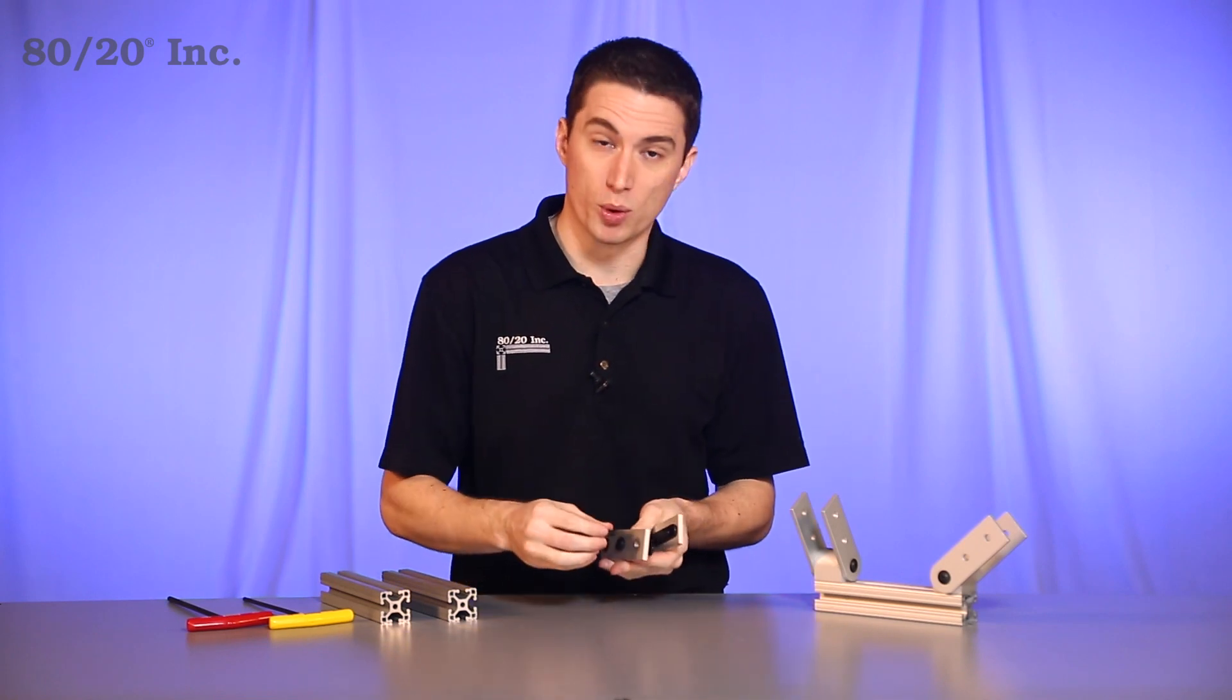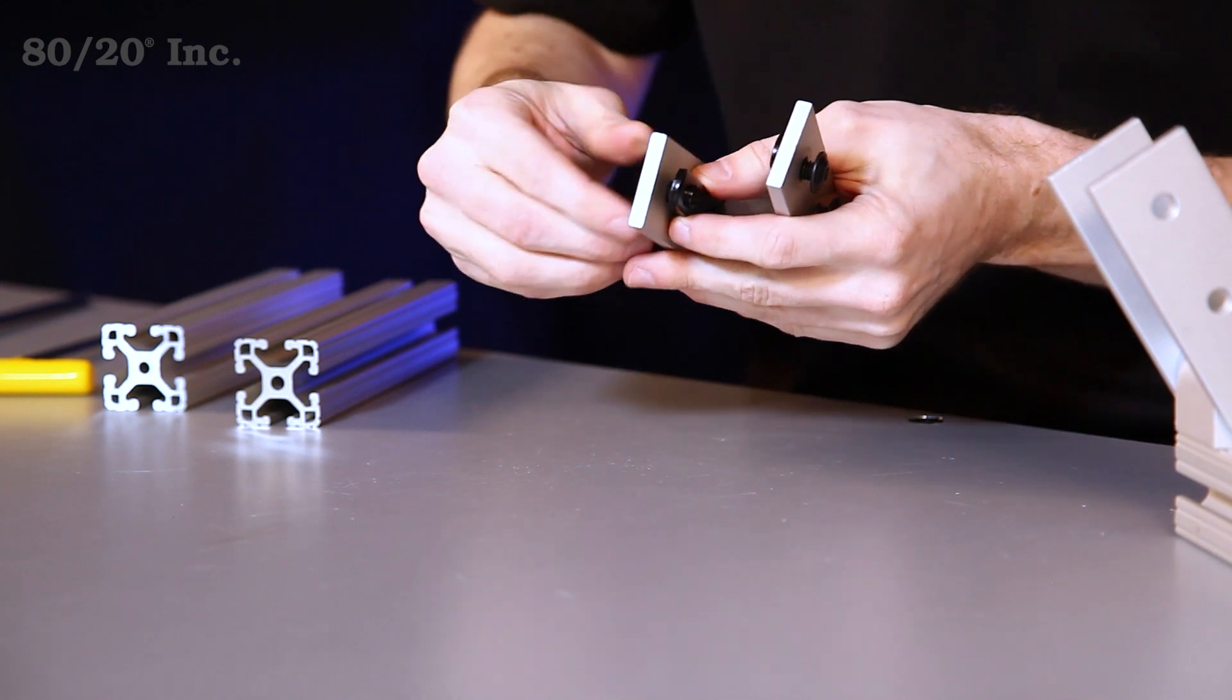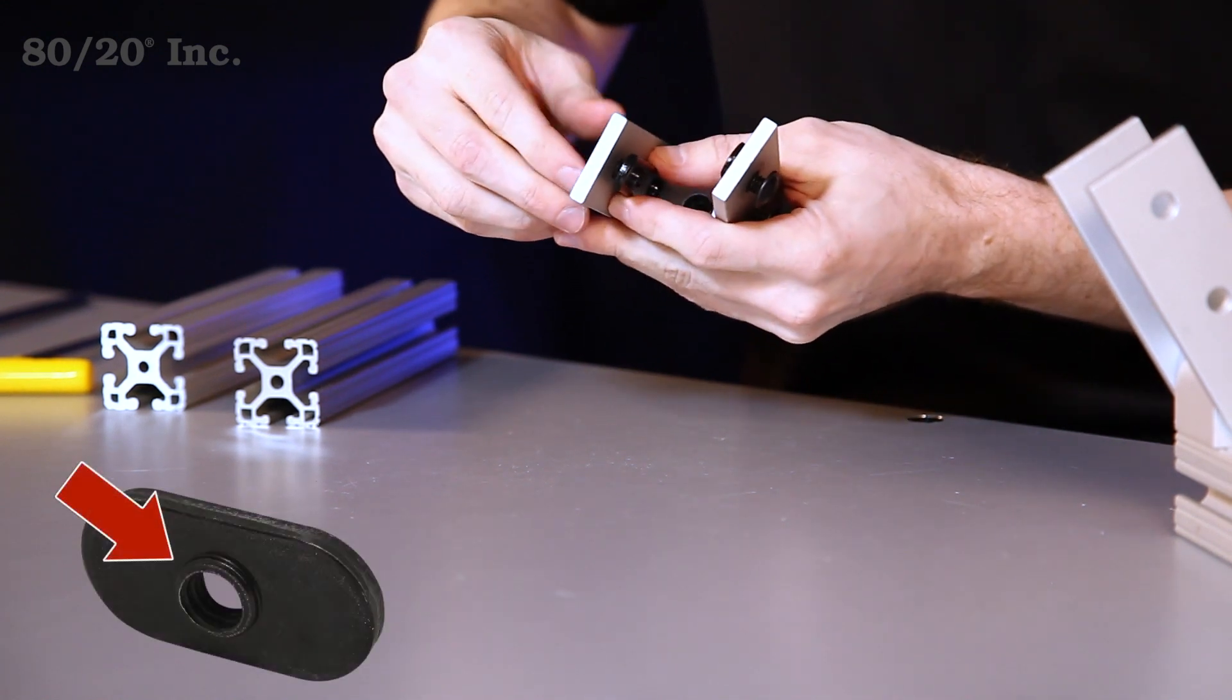Now the first thing I'm going to do is take the Structural Pivot and put one last bolt and one last T-nut into it. It's important to know when you're installing your T-nuts to have the pilot projection facing downwards.